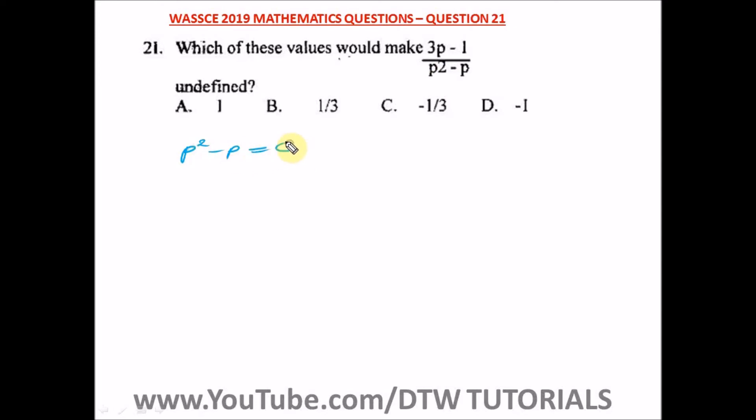So from here you can bring out p, where p would come out and we're left with p minus one equal to zero. So it's either p is equal to zero or p minus one is equal to zero.